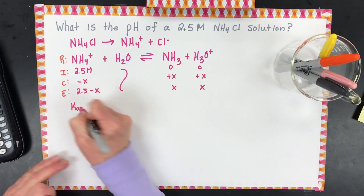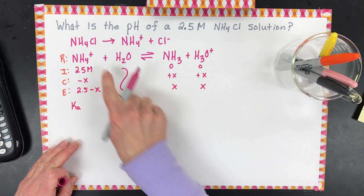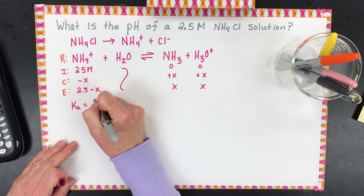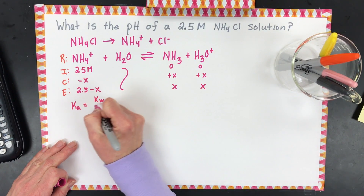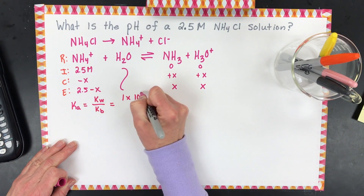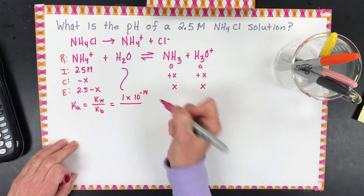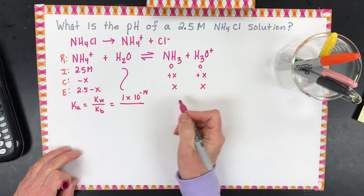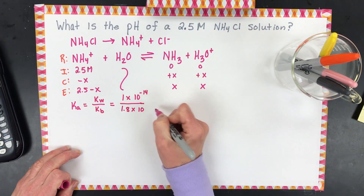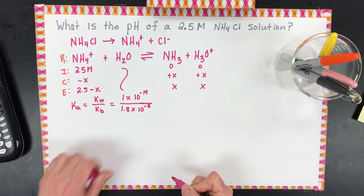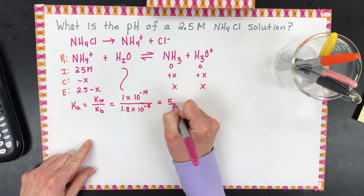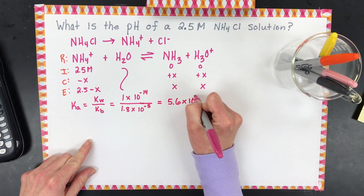Because it's acting as an acid — a proton donor — you do not know the Ka for ammonium, so you have to take Kw divided by Kb. The Kw of water at 25 degrees is 1×10⁻¹⁴. The Kb for ammonia is 1.8×10⁻⁵. So Ka equals 5.6×10⁻¹⁰.